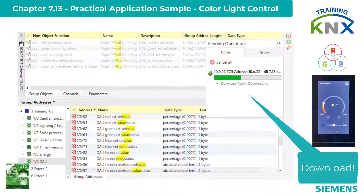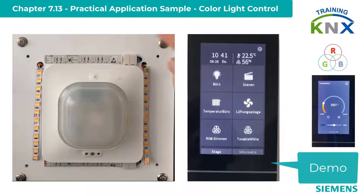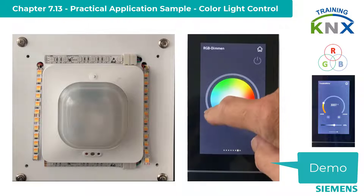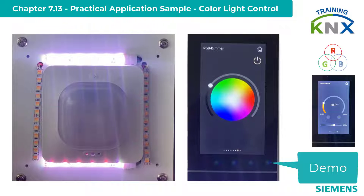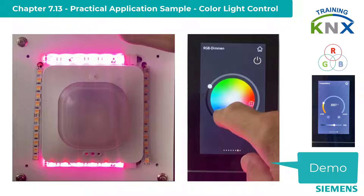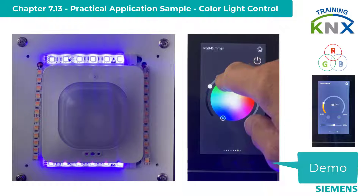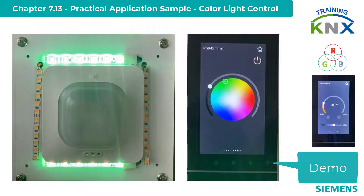The TC5 is updated by download again. Now to the function test on the panel. For demonstration, I mounted a panel with the two DALI light strips under the TC5. I first navigate to the RGB dimming page. The outer ring controls the overall brightness, and the color circle determines the emitted hue.